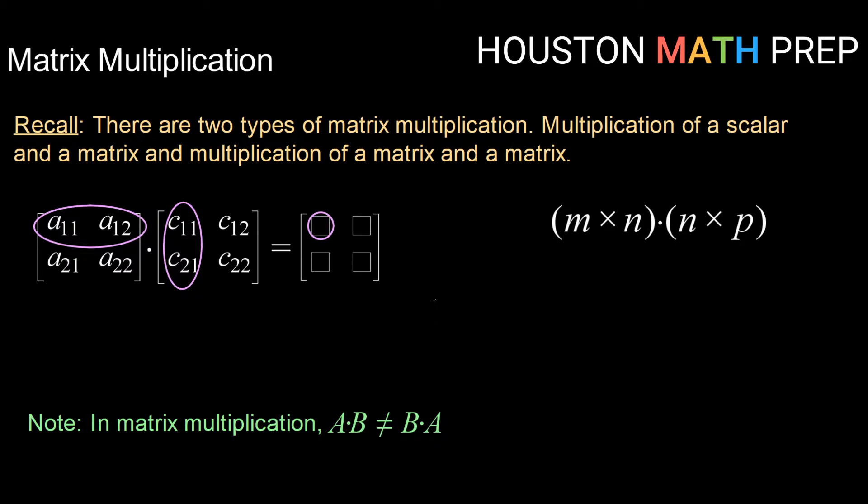When we do this, we take the rows in the matrix on the left and we distribute that row to the column of the matrix on the right. So I'm distributing row 1 of my left matrix into column 1 of my right matrix. The result of that, so row 1 times column 1, goes in our answer matrix in that spot, row 1, column 1.